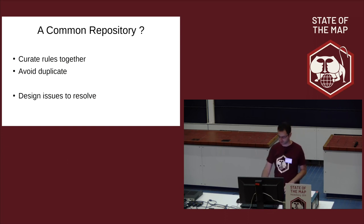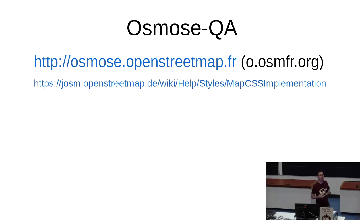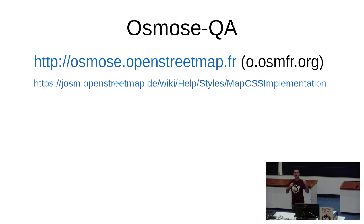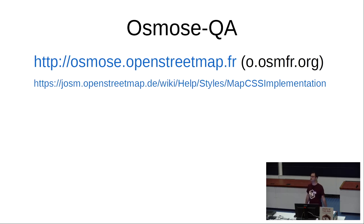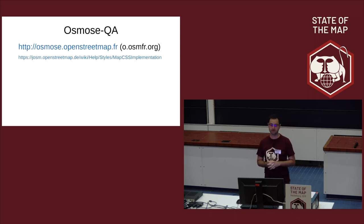So that's about MapCSS. The question is now how we can create this common repository and reconcile the differences between tools — for example JOSM's error/warning/information classification versus Osmose's impact-level classification, and other implementation-specific details. There is a URL on the OpenStreetMap wiki, and the MapCSS documentation — which is in fact based on the JOSM implementation — is the best documentation available on MapCSS today. Thank you.